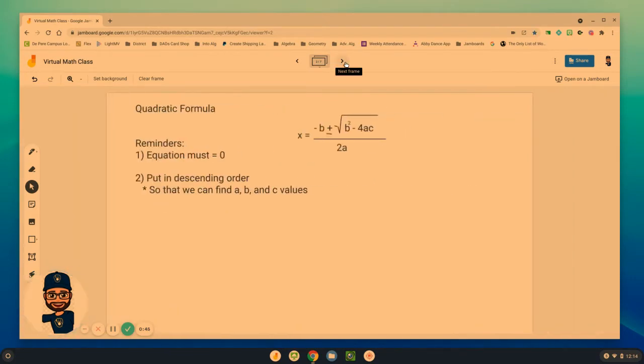Now the quadratic formula, remember here it is, and if you didn't write this down last week, you might want to do it today. x equals the opposite of b plus or minus the square root of b squared minus 4ac all over twice a. A couple of reminders. One, our equation has to equal zero before we can actually find that a, b, and c value. So we need to make sure the equation is equal to zero and then try and put them in descending order, the x squared, then the x, and then the constant so that we can identify those three values.